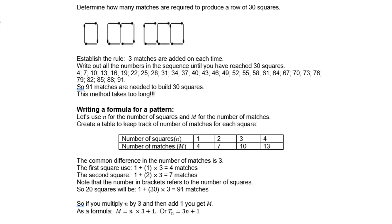Then you'll notice that 7 minus 4 is 3, 10 minus 7 is 3, 13 minus 10 is 3. So there is a common difference.